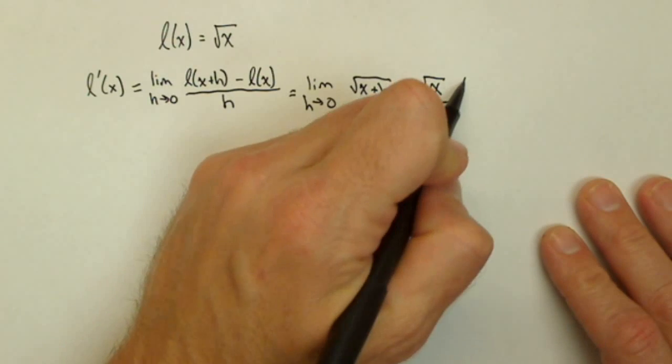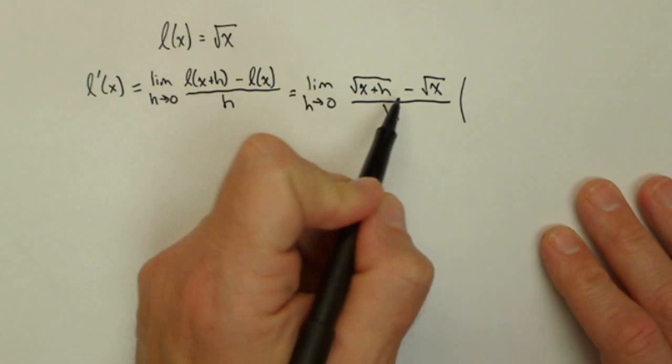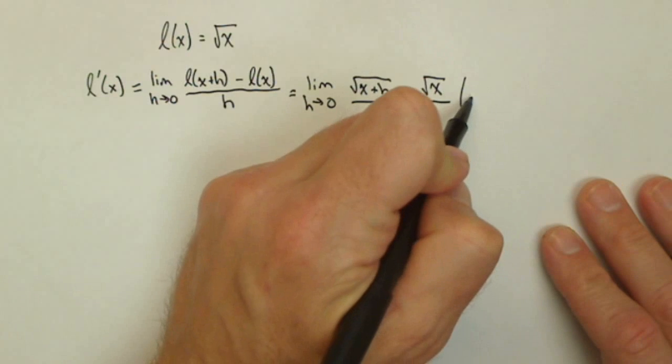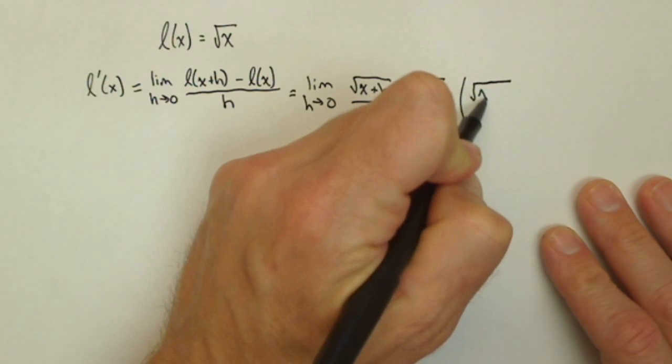A lot of times when you have a radical what we like to do is multiply by what's called the conjugate because it gets rid of our square roots and I'll show you how that works here in a second.